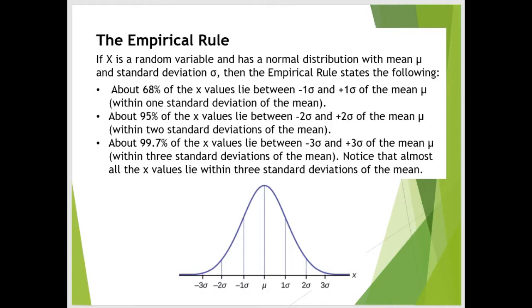Now we're going to take a look at the empirical rule. If we are looking at a random variable with a normal distribution, it looks kind of like this. It has a nice bell curve with a mean of mu and the standard deviation sigma. Then the empirical rule states this.